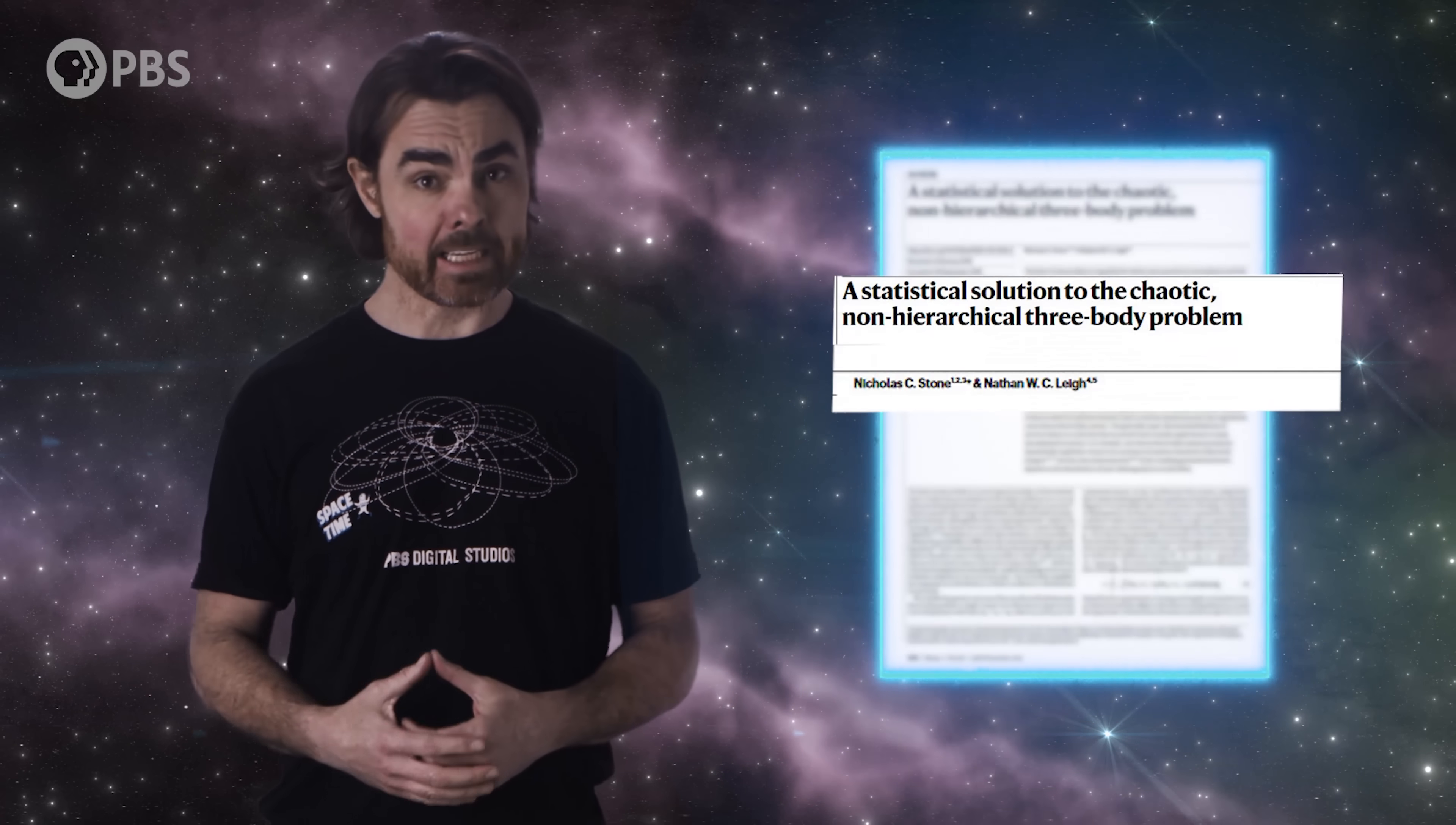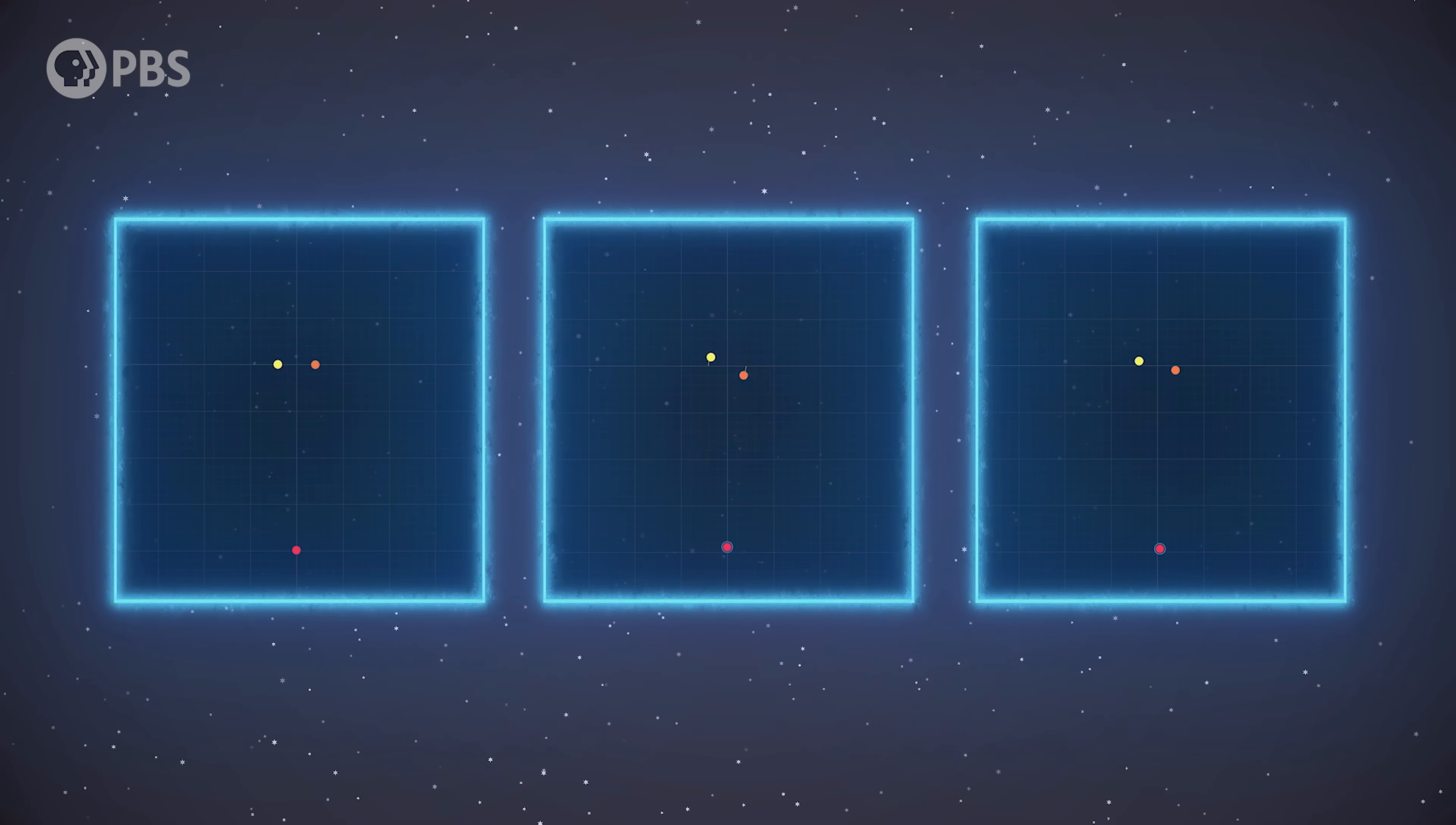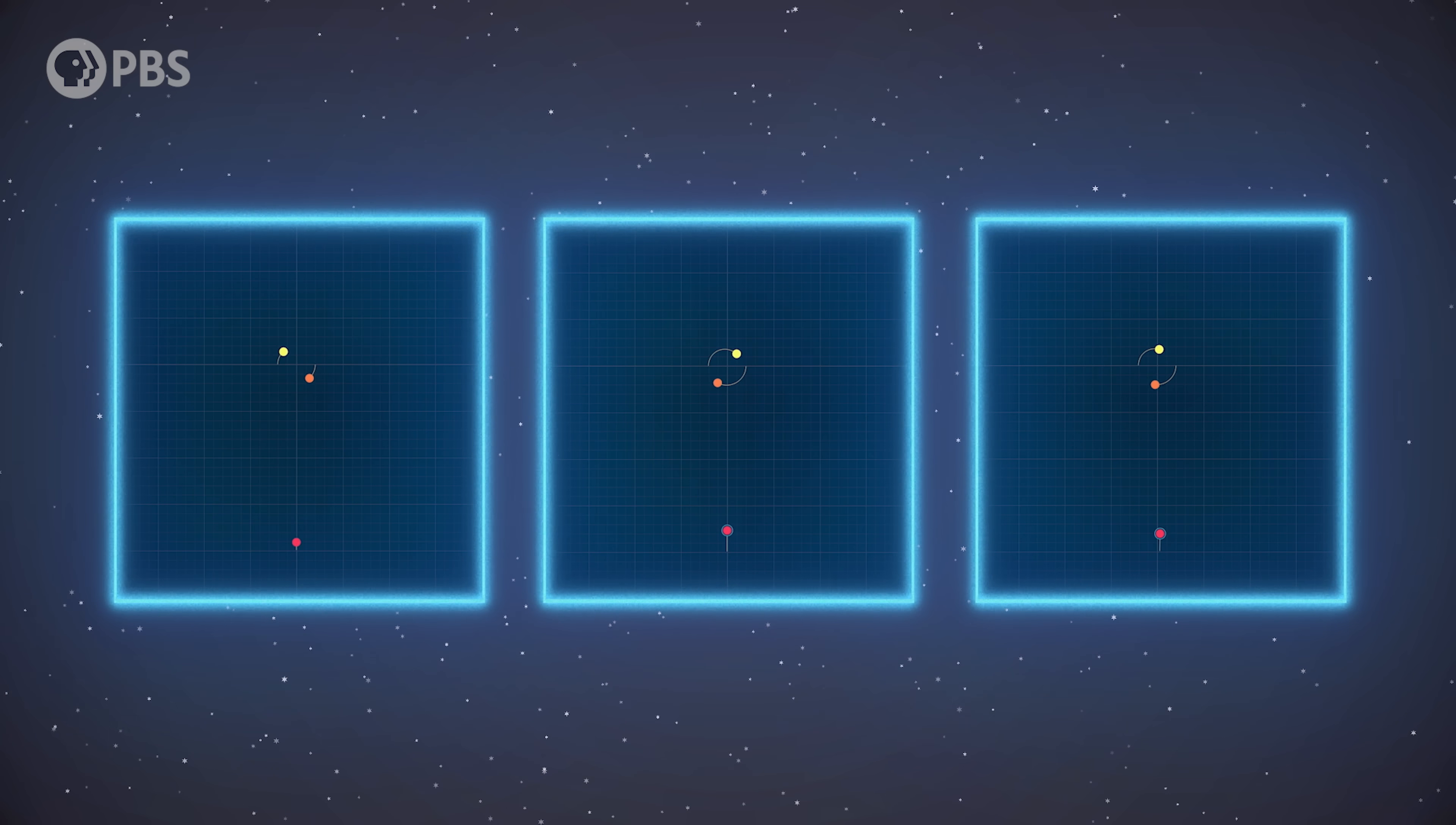Very recently a new approach to solving the 3-body problem has appeared, which transforms the chaotic nature of 3-body interactions into a useful tool rather than a liability. Nicholas Stone and Nathan Leigh published this in Nature in December 2019. The thing about chaotic motion is that the state of the system seems to get randomly shuffled over time. The motion is actually perfectly deterministic, defined between one instant and the next, but can be thought of as approximately random over long intervals.